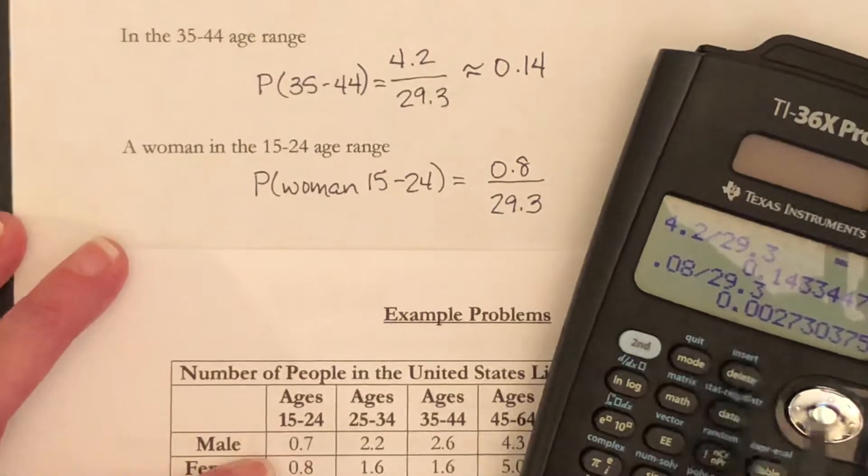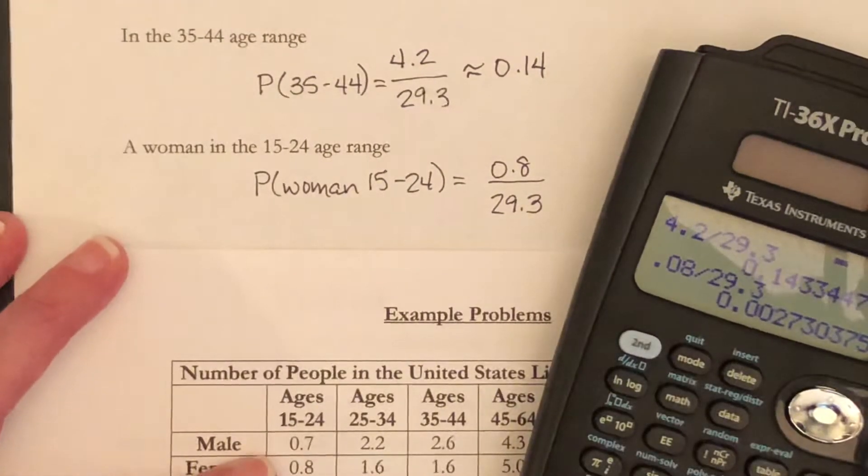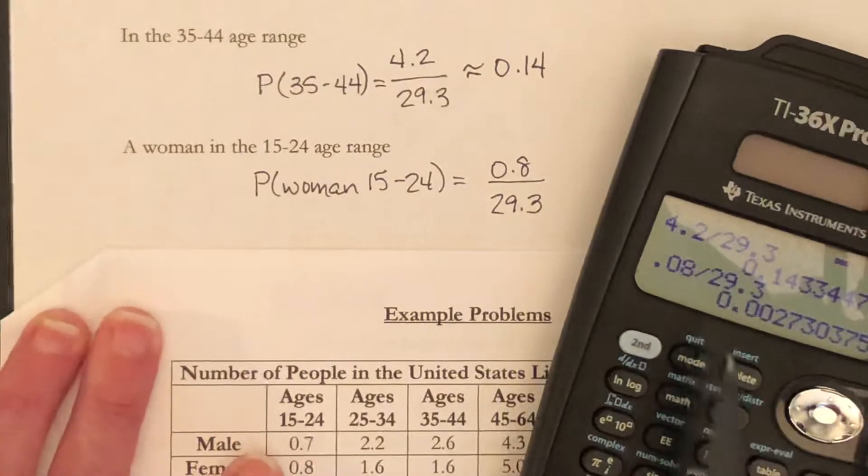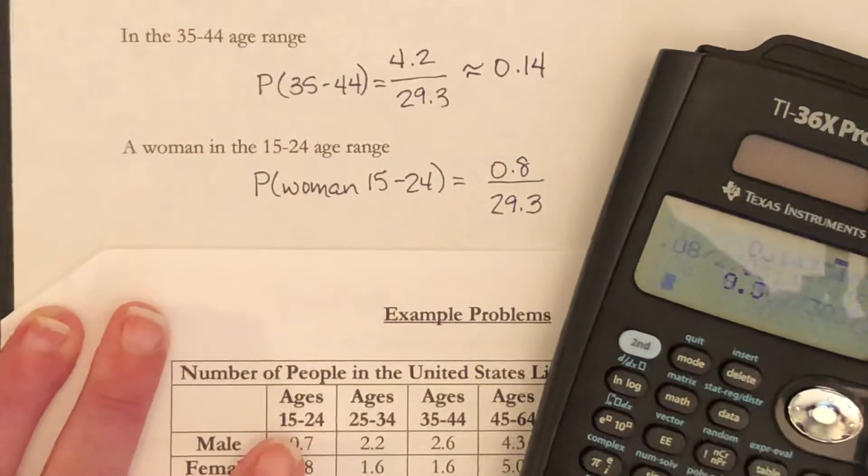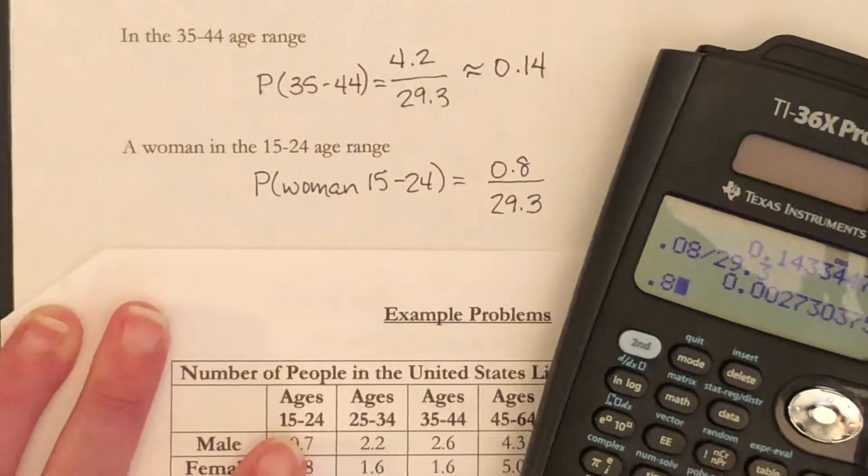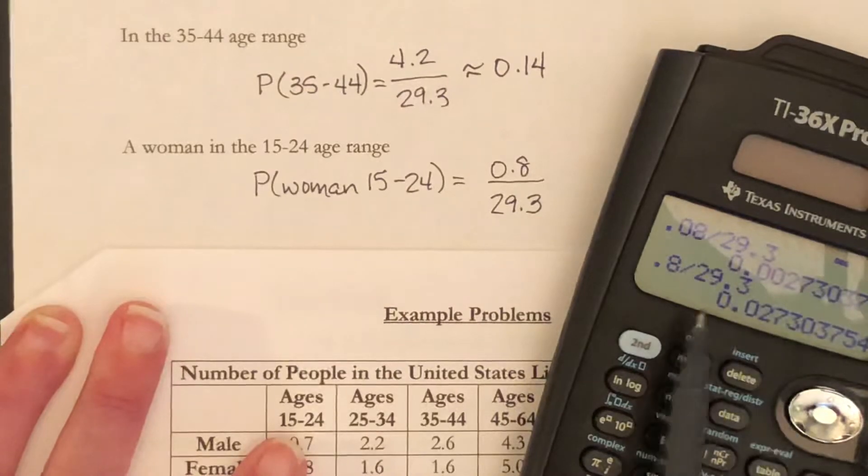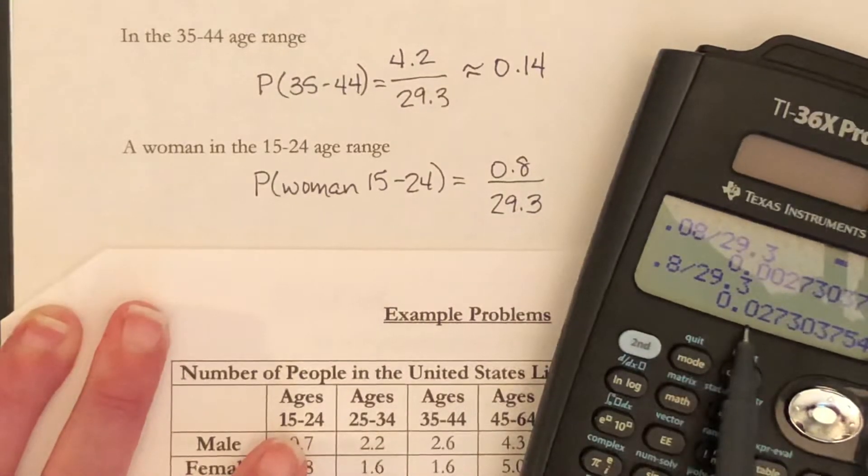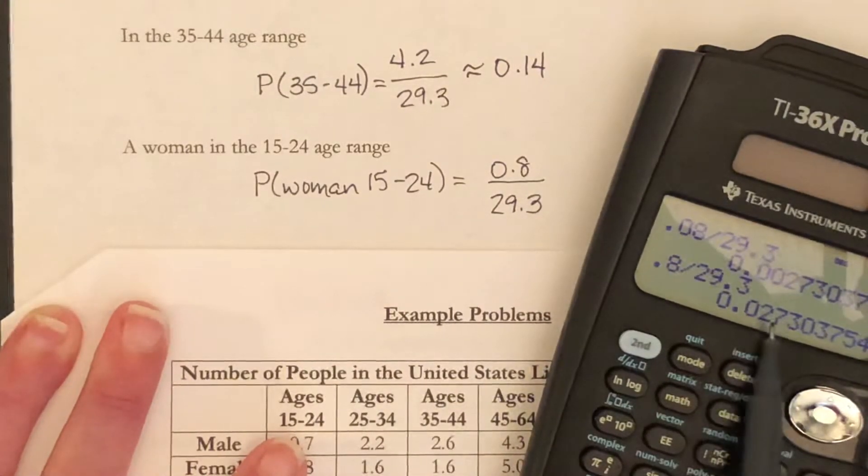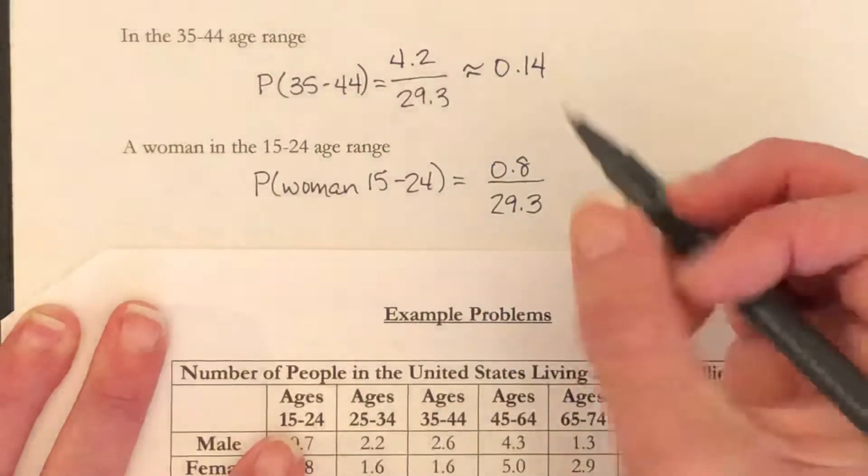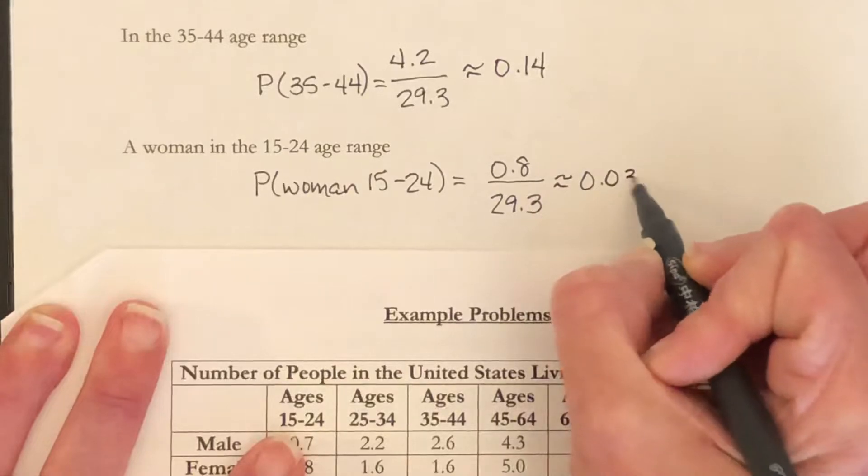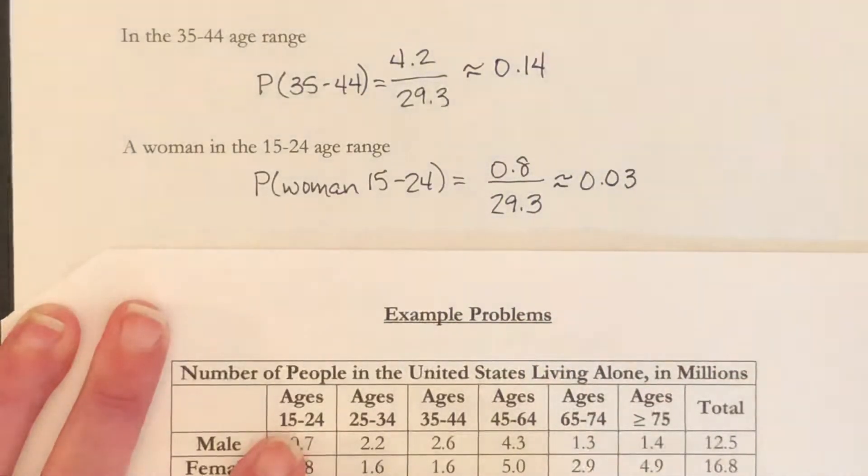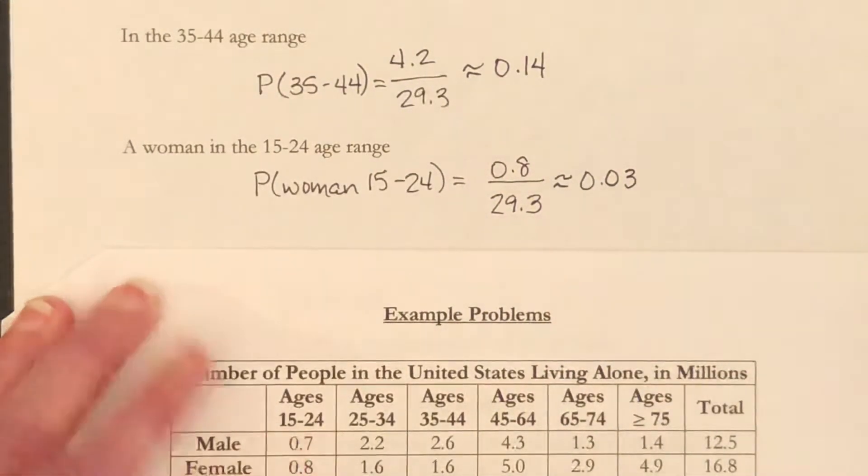Do that division and you get approximately... I typed in 0.08 instead of 0.8, let's try that again. You get 0.03. There's a very small chance that a random person would fit into that category.